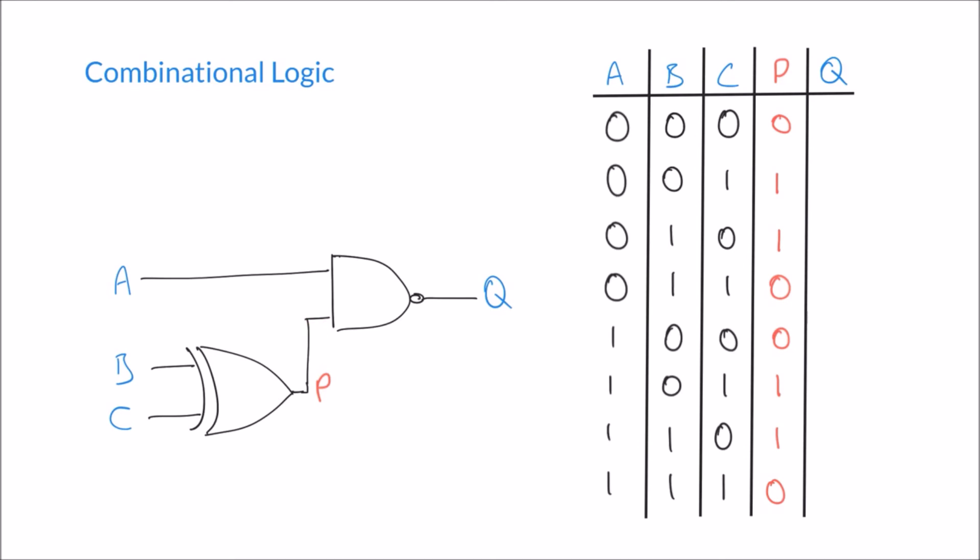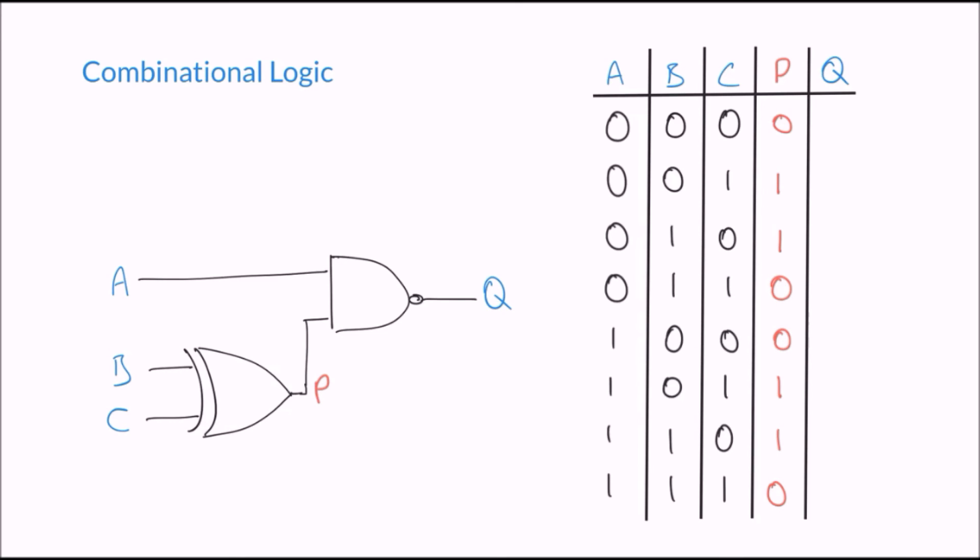So let's have a look for any instances where A and P are both 1, and the output will be 0. That happens here, and here. The rest of the time, we'll get 1 on the output.